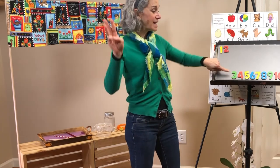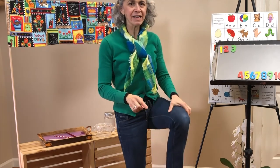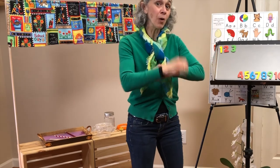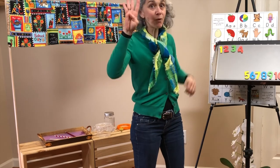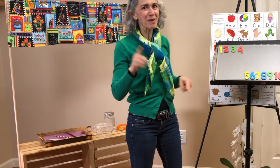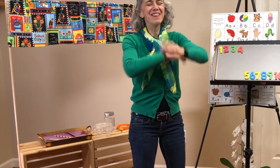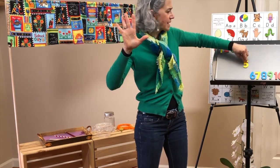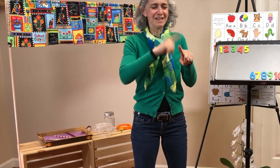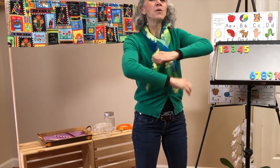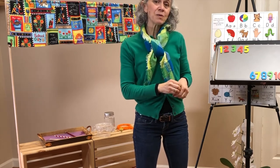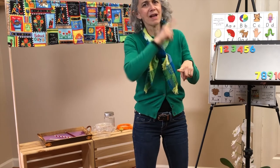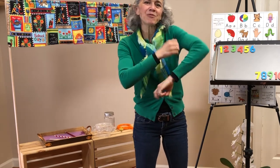This old man, he played three. He played knick-knack on his knee. With a knick-knack, paddy-whack, give a dog a bone. This old man came rolling home. This old man, he played four. He played knick-knack on a door. With a knick-knack, paddy-whack, give a dog a bone. This old man, he played five. He played knick-knack on a beehive — don't do that. With a knick-knack, paddy-whack, give a dog a bone. This old man, he played six. He played knick-knack with some sticks. With a knick-knack, paddy-whack, give a dog a bone. This old man came rolling home.